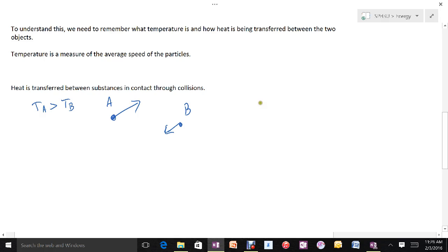When these two things collide with each other, there's a chance that some of the energy may go from A to B, as in B might fly away faster than it was in the first place, and A might fly away a little bit slower.